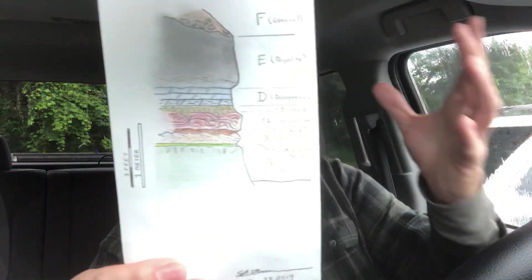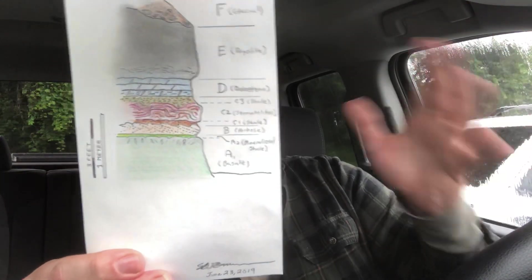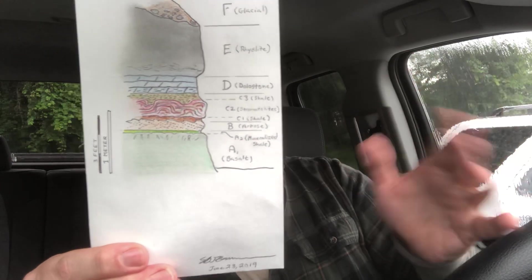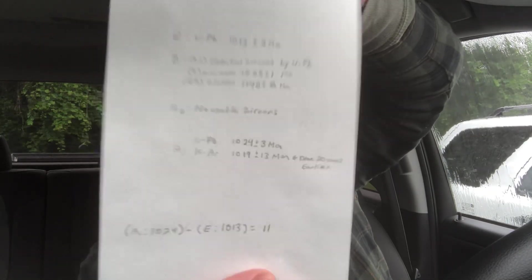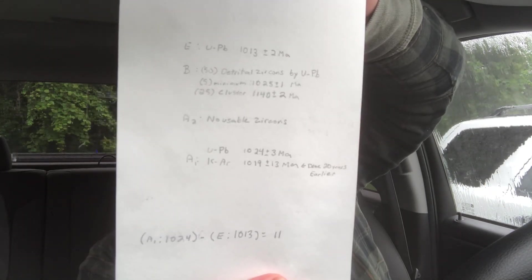You can date the stromatolites to within 11 million years. They formed somewhere between 1.013 and 1.024 billion years ago. And I'm going to show you the back of this so you can just see what I wrote there. So that's how this works.